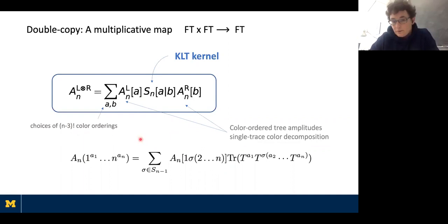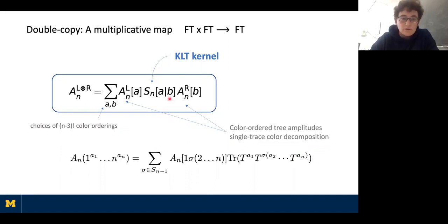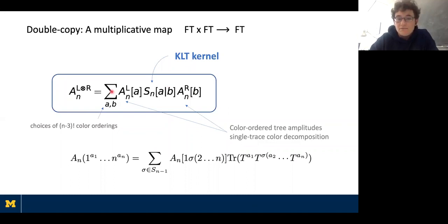The kinematic factors of these traces are independently gauge invariant. These are called partial amplitudes or color-ordered amplitudes, and those are the color-ordered amplitudes that enter on the left and right as the left and right sector amplitudes in this double copy relation. One has to sum over a subset of the possible color orderings — there are (n-1)! possible independent color orderings in principle, some related through various relations — but it turns out you only sum over (n-3)! of those. There's a kernel involved called the KLT kernel, which depends on the Mandelstam variables of n-particle scattering. The result on the left-hand side is the gravity amplitude.